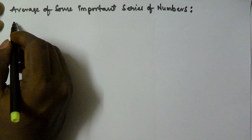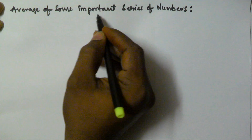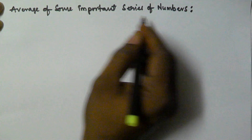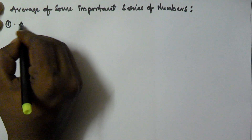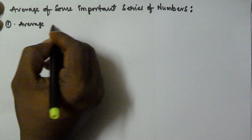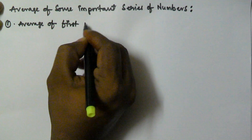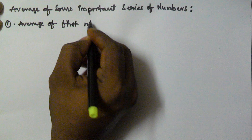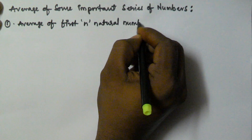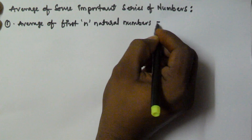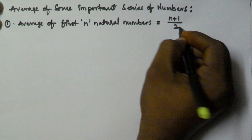Hello friends. In this video I will show you how to find the average of some important series of numbers. The first one is: the average of first n natural numbers is equal to (n + 1) / 2.